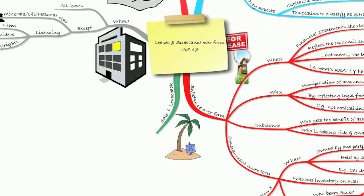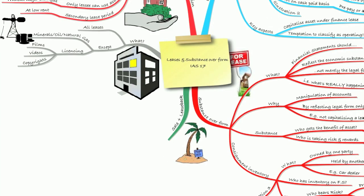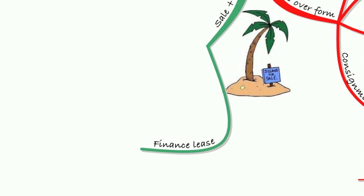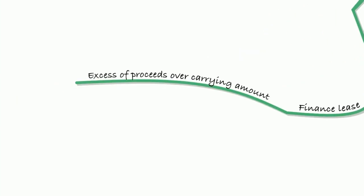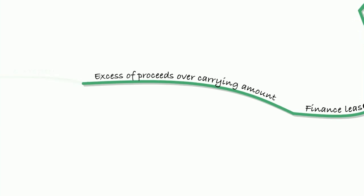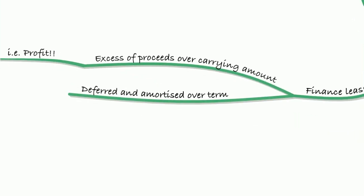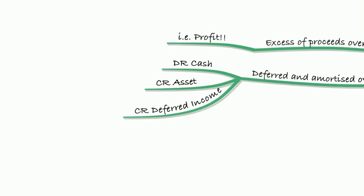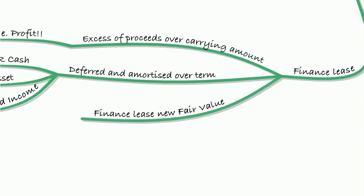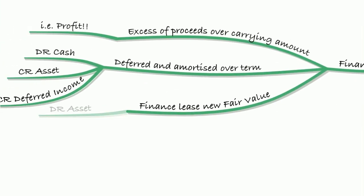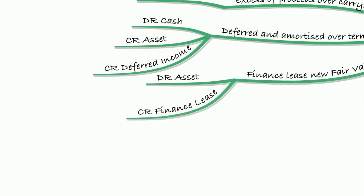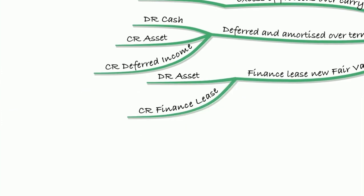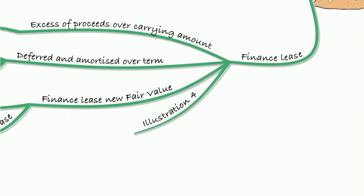We also covered sale and leaseback of assets — selling an asset and leasing it back on a finance lease. We take the excess of the proceeds over the carrying amount (i.e. the profit), defer it, and amortise it over the term of the new lease. We debit cash, credit the asset to remove it, and the profit goes to deferred income, released over the term of the lease. We then create a new finance lease at the new fair value of the asset, debit the asset, credit the finance lease liability, and treat it as a normal finance lease. This was covered in Illustration 4.